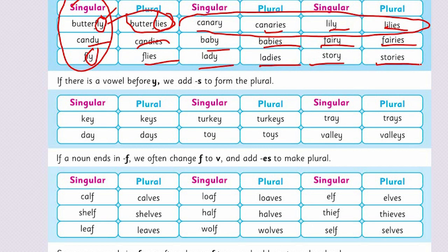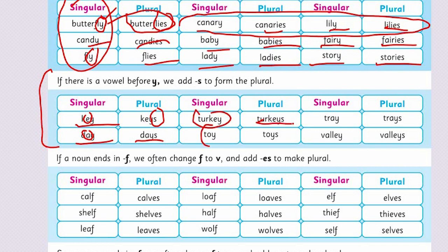Now look at the third way. If there is a vowel before Y, we add S to form the plural. If we have a vowel sound — A, E, I, O, U — before the Y, we will only add S. Like: key → keys, day → days, turkey → turkeys, toy → toys, tray → trays, valley → valleys.